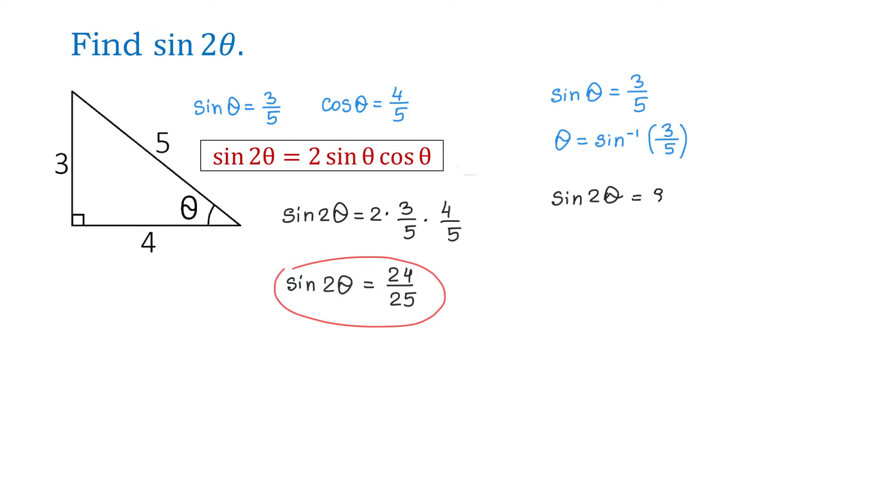So we will have sine of 2 and in place of theta, we will write inverse sine of 3 over 5. Then, we will use a calculator, I use a Casio calculator, and we will get that sine of 2 theta equals 24 over 25.